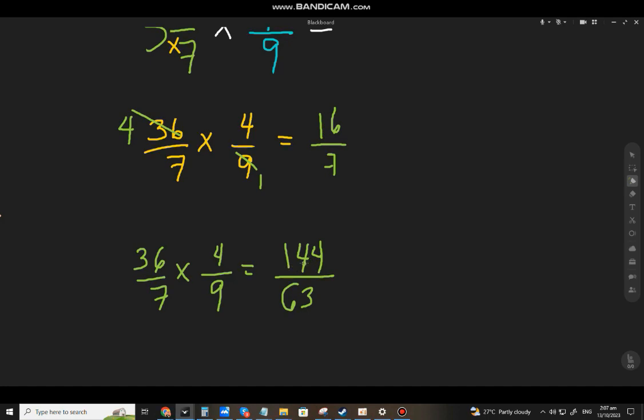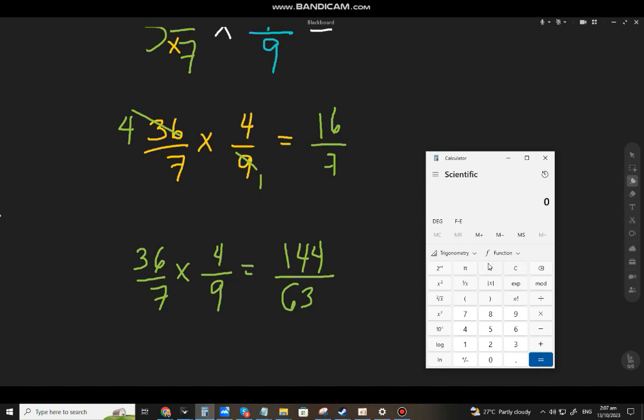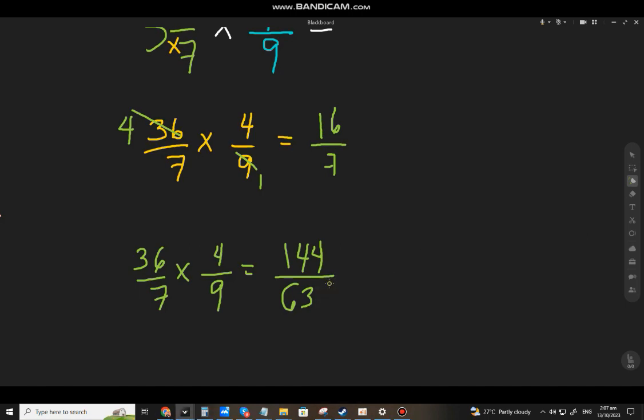So, yung 144 mo, pwede silang i-divide. 144, pwede mo i-divide ng 9. That will be 16. At yung 63, pwede mo rin silang i-divide ng 9. That will be 7. So, pakita ko sa inyo na pwede. 16 at ito naman, 63 divide mo ng 9, 7 din.